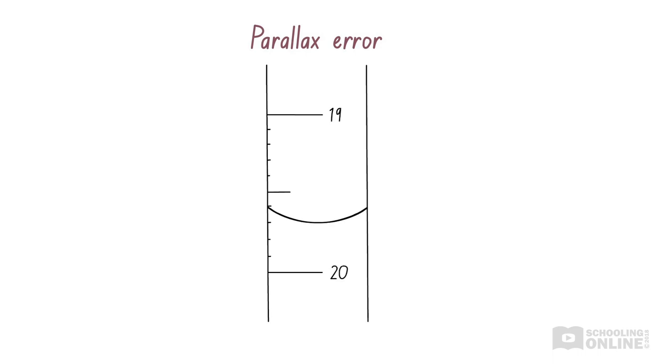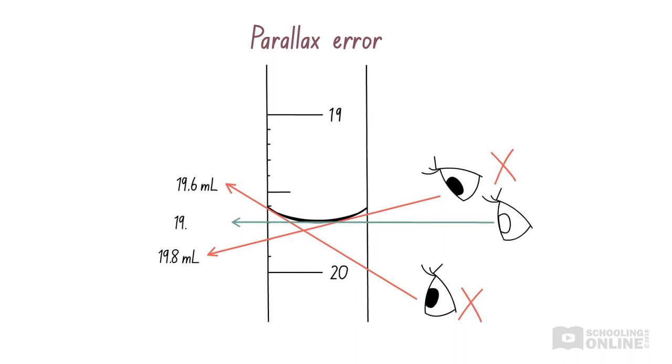Another example is parallax error, which we mentioned before. This occurs when we read the wrong value because we are not looking from the correct angle. For the measurement to be accurate, we must always read the instrument from eye level.